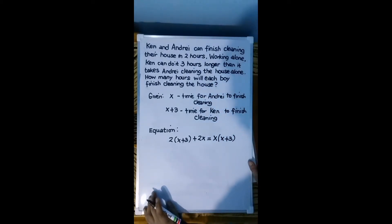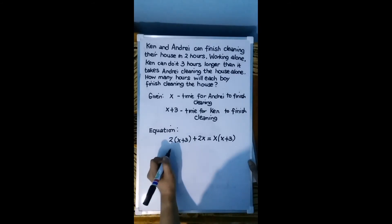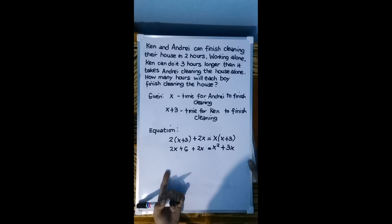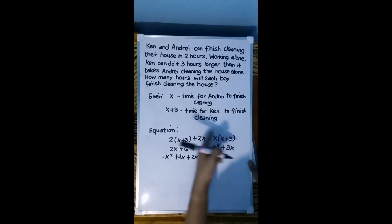So let's have the solution. 2 times (X+3), you have 2X plus 6, plus 2X equals X times X, you have here X squared, plus X times 3 is 3X. Then combine like terms. We'll move everything to the left side to make the general form. So we have negative X squared plus 2X plus 2X, then move the 3X, it becomes negative 3X, then positive 6 equals 0.